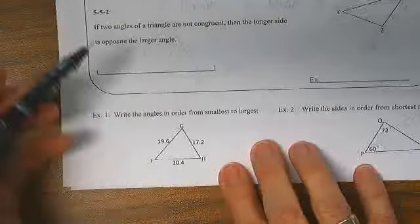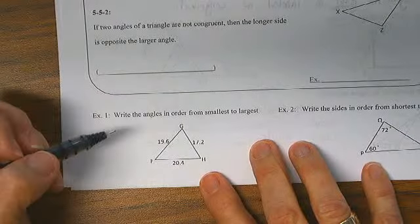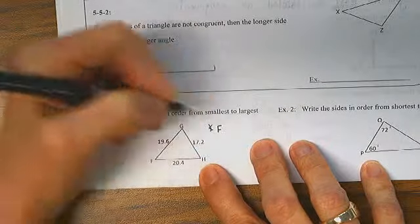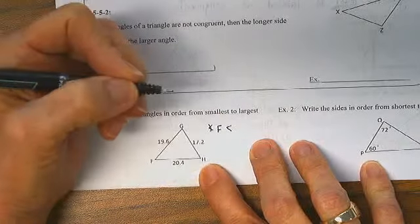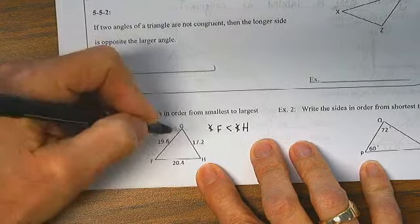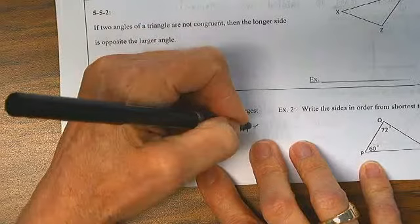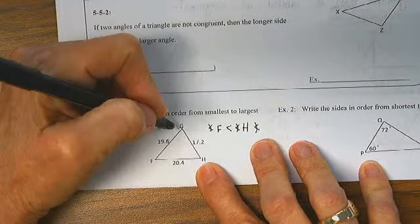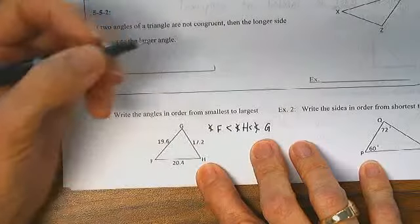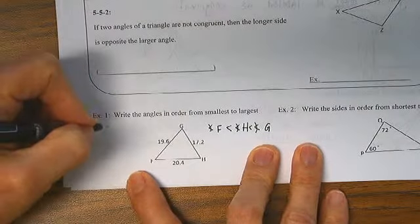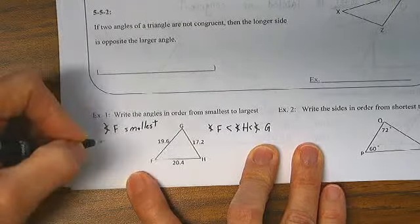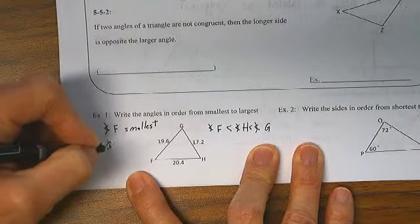How do we apply this? Write the angles in order from smallest to largest. This is the smallest side, so angle F is the smallest. It is less than angle H because FG is next biggest. And the biggest angle is going to be angle G. So angle F is smallest. Angle G is largest.